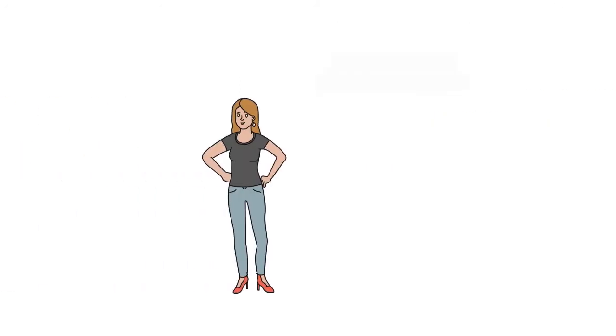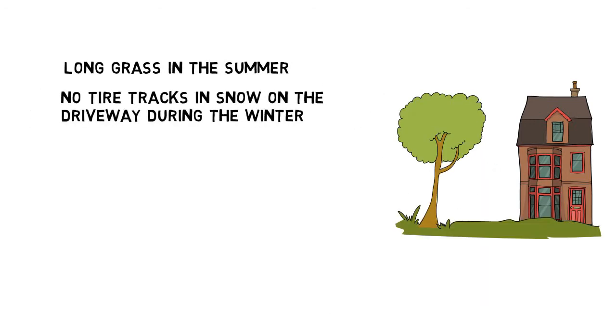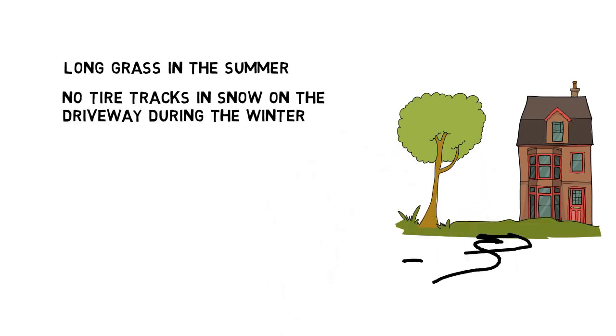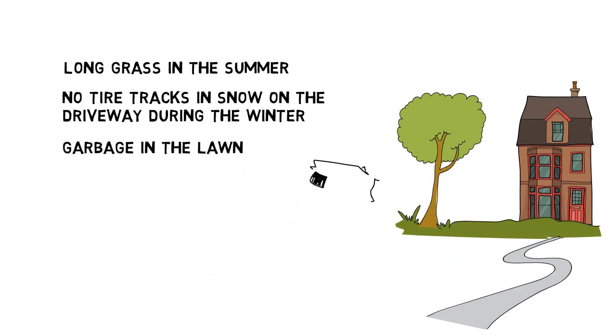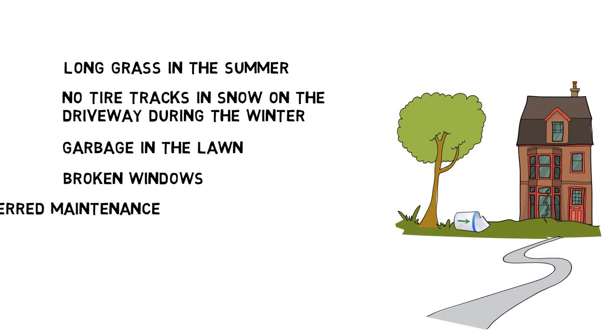So now I'm sure you're asking, how do I find the properties? Another great question. All you do is keep an eye out for properties that look like they are vacant or distressed. Some giveaways are long grass in the summer, no tire tracks and snow on the driveway during the winter, garbage in the lawn, broken windows, deferred maintenance, and so on.